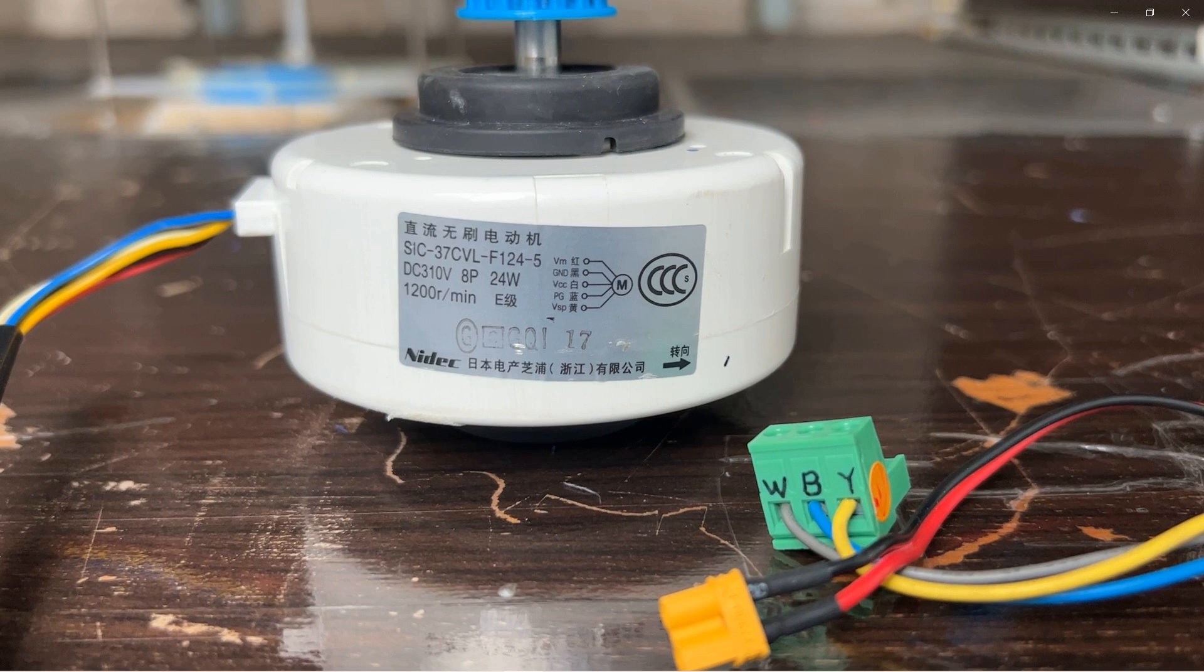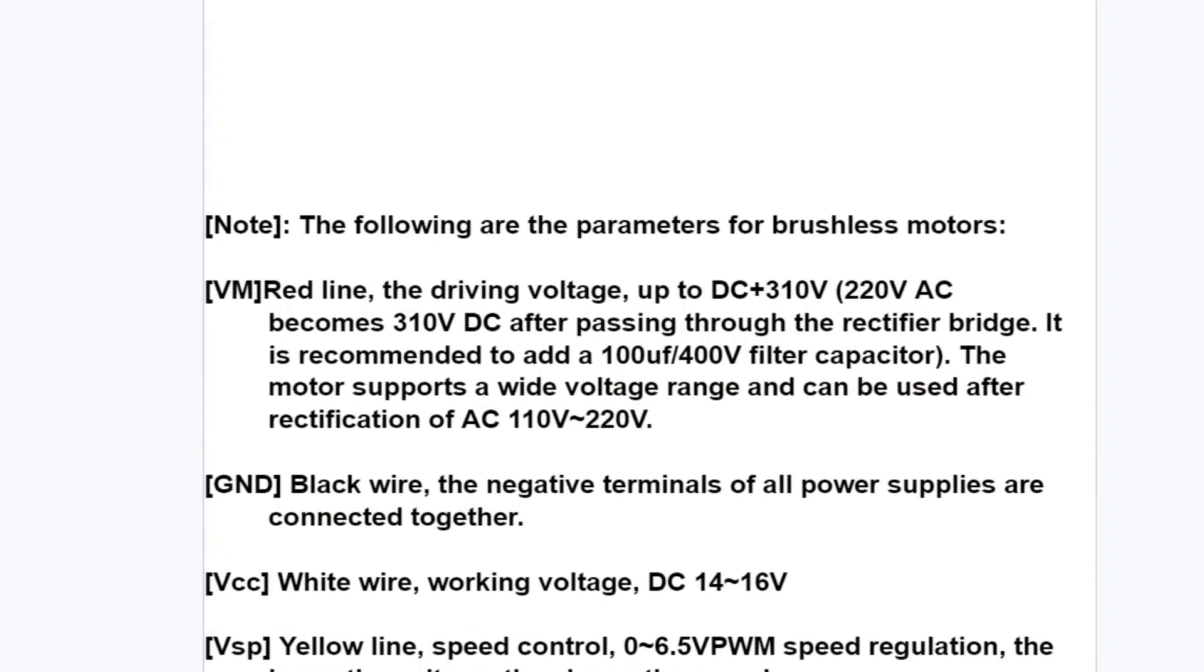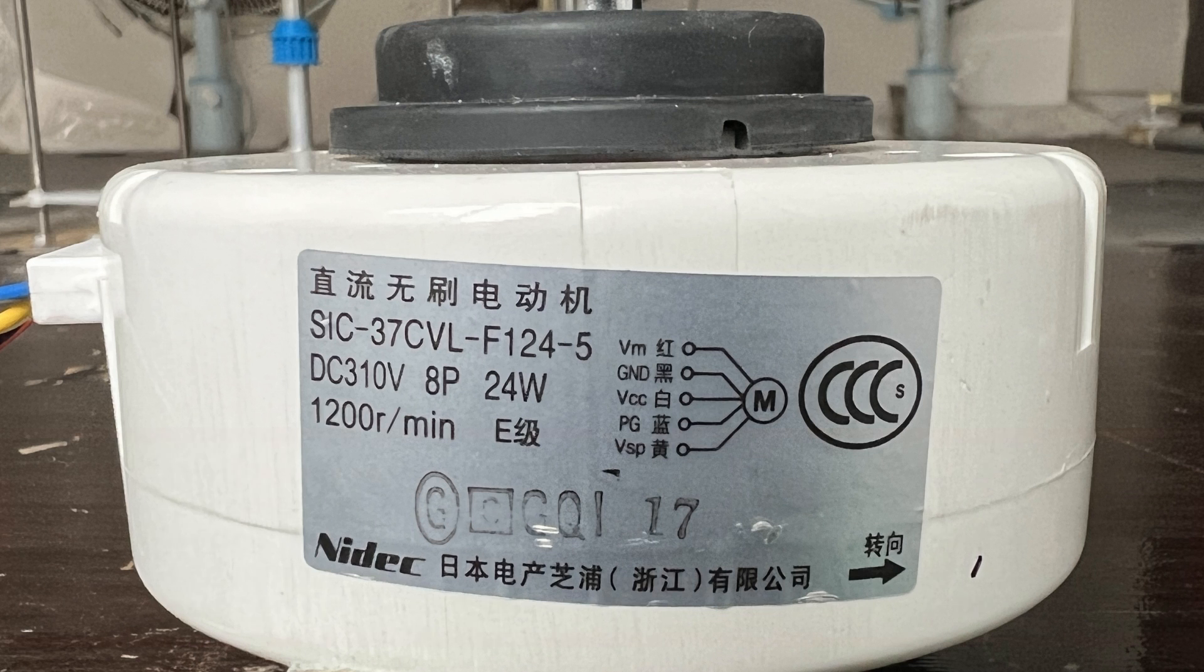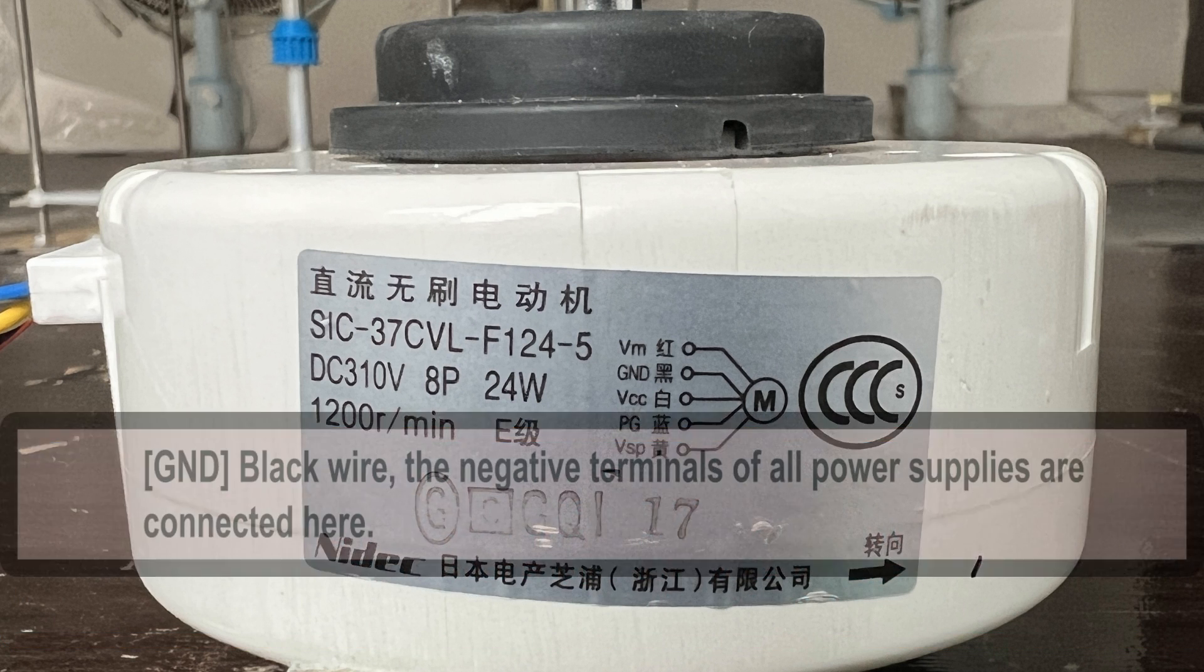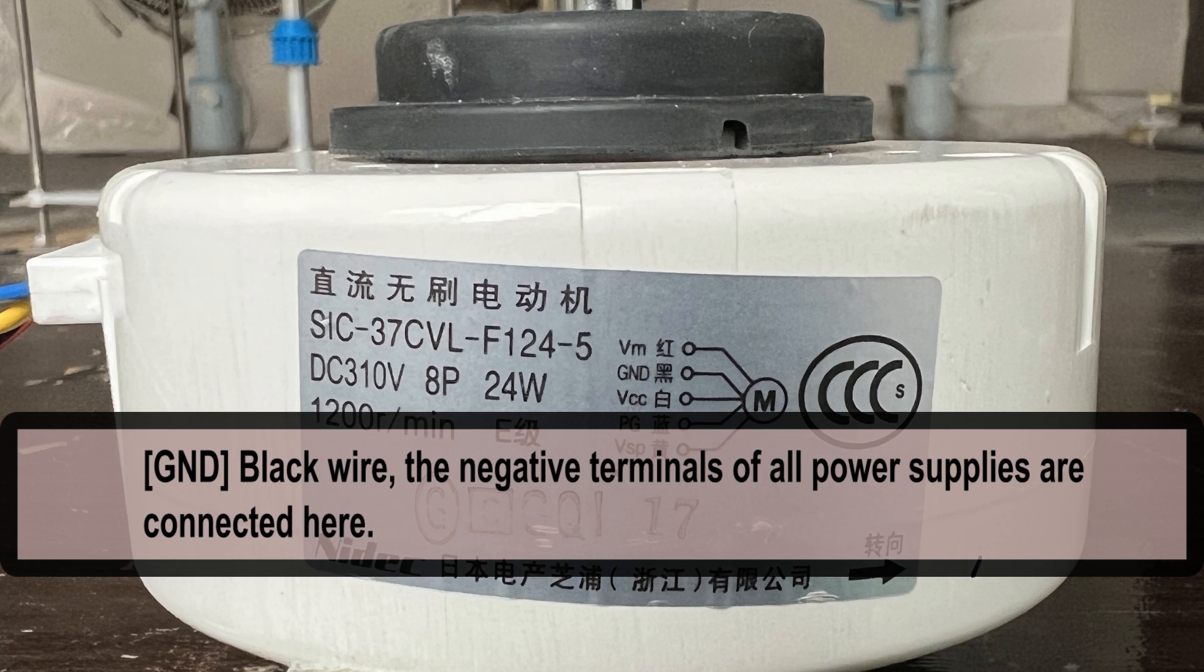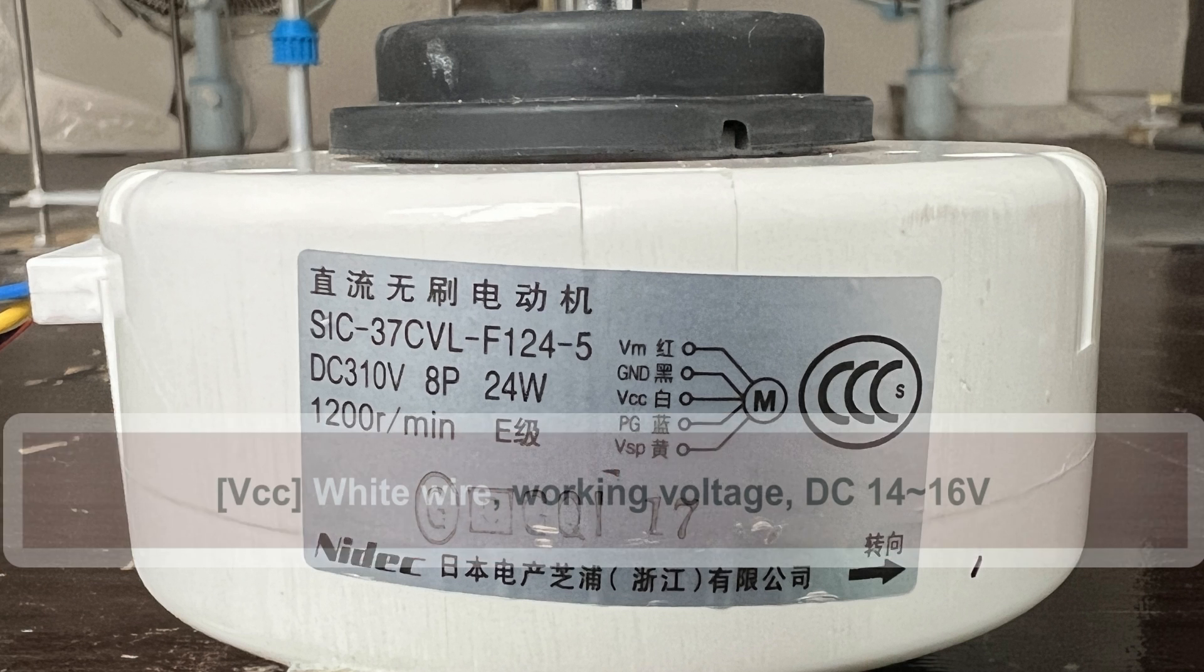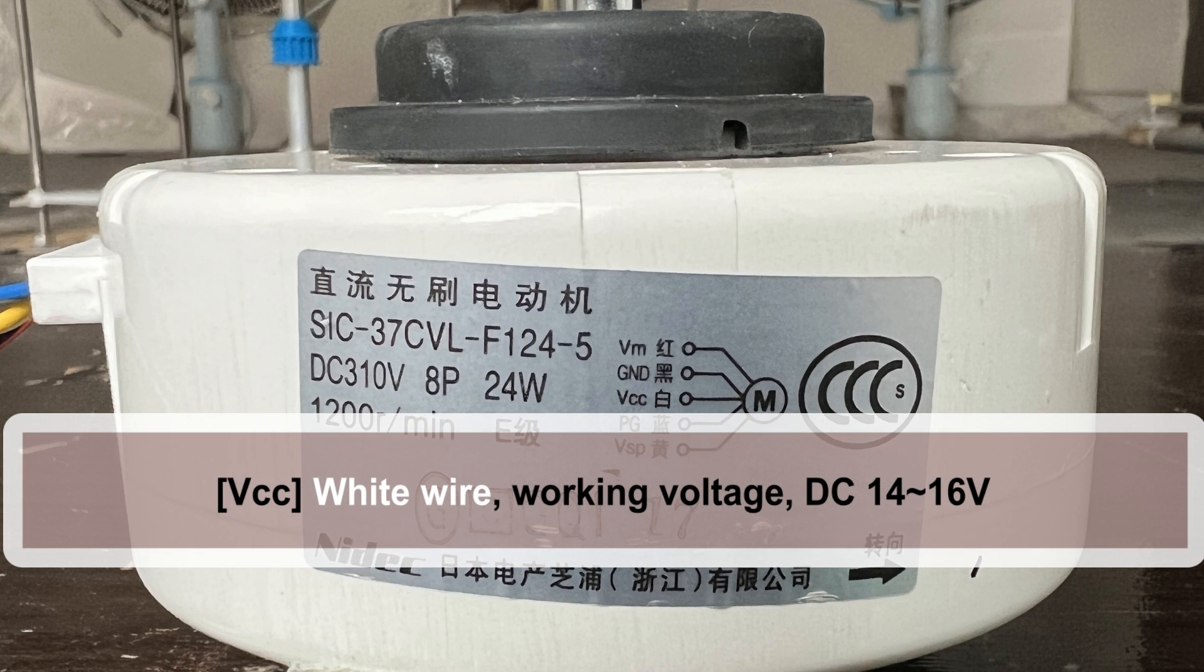Five lines in total. Check the seller's instructions. The red line VM is the power supply to the motor. Note that it is DC, which can reach 310 volts. The black wire GND is the ground wire, and the negative terminals of all power supplies are connected here. The white line VCC is the working power supply for the control board inside. The instructions say to connect DC 14 to 16 volts, but I only connected 12 volts.